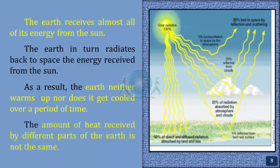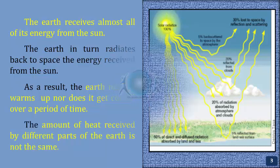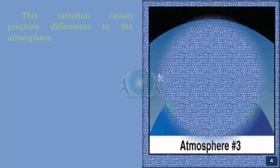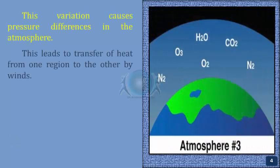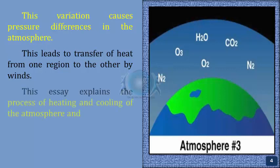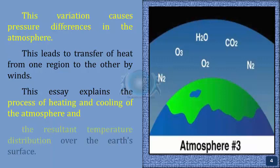The amount of heat received by different parts of the Earth is not the same. This variation causes pressure differences in the atmosphere, which in turn leads to the transfer of heat from one region to the other by the winds. This essay explains the process of heating and cooling of the atmosphere and the resultant temperature distribution over the Earth's surface.